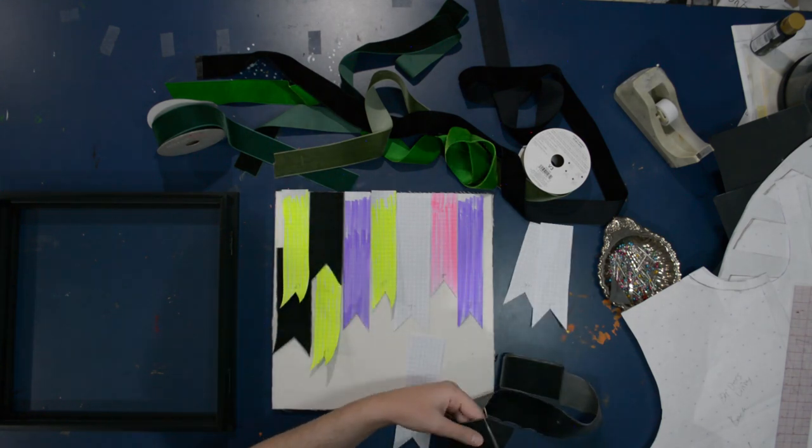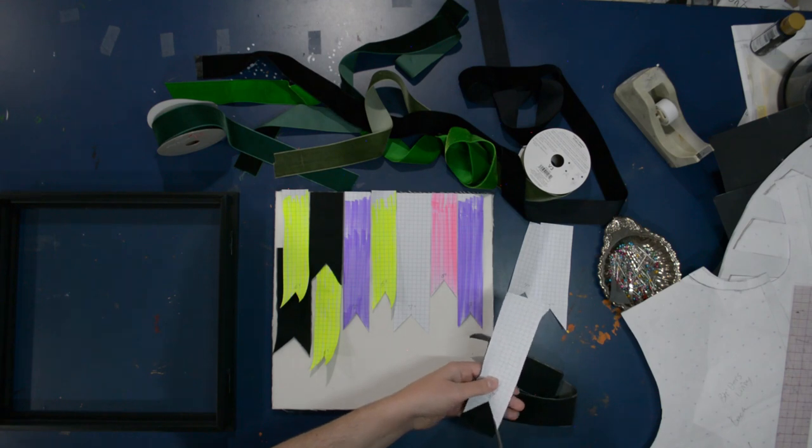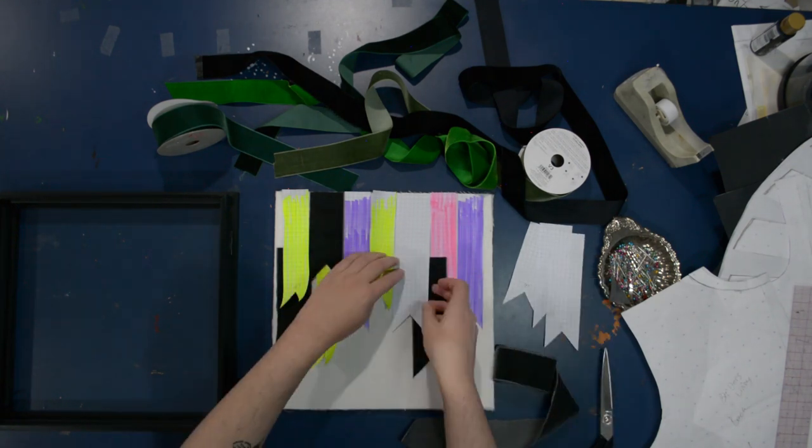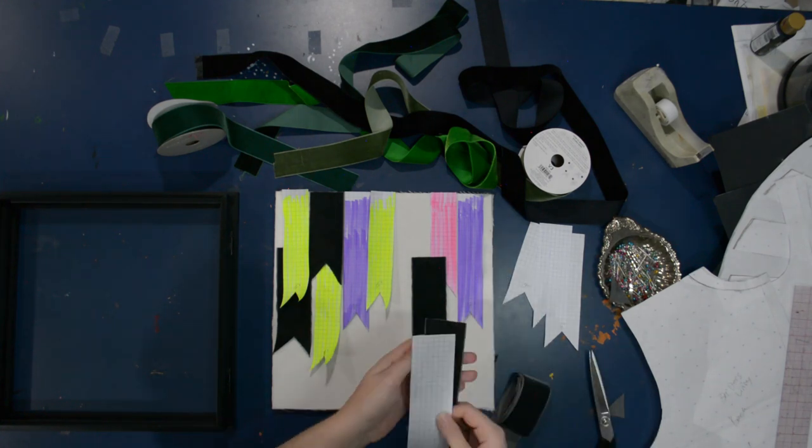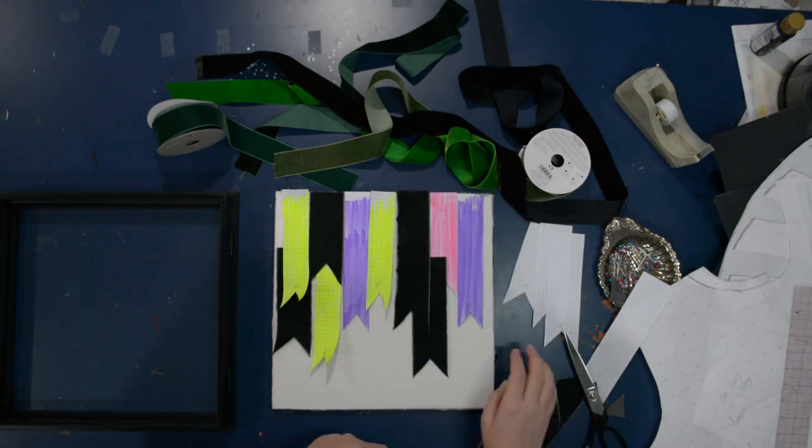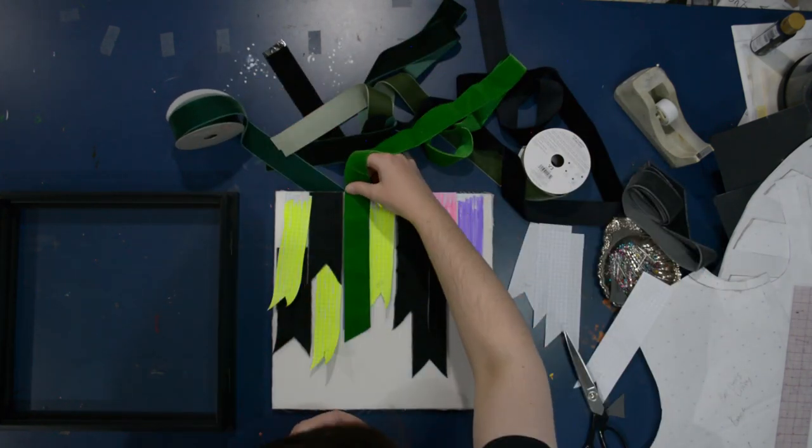But I have my shadow box here, this is a 12 by 12 shadow box from Michaels. This one opens in the front and stays closed with magnets so I can get in here and get to the brooches. I'm going to cut these ribbons quite long that way I can have easy access to the brooches as well, and it's easy to pin them to these loose pieces of ribbon.